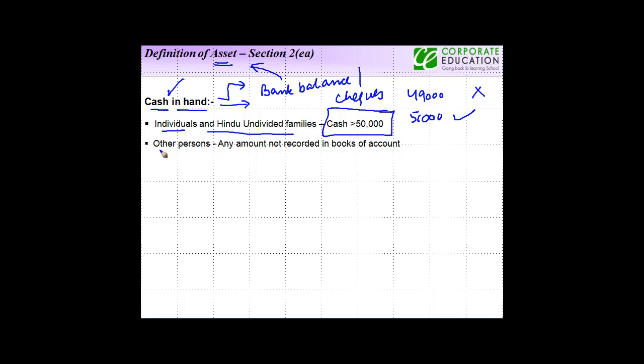For other persons, like a company, any amount not recorded in the books of accounts is to be included as an asset under the definition of cash.